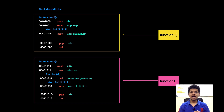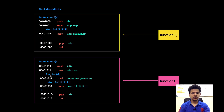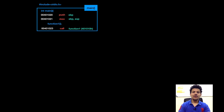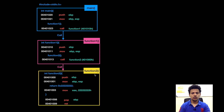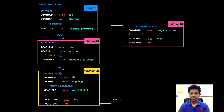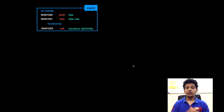For better understanding, I have divided the program into different parts. This is our main, this is our function 1, and this is our function 2. Now we will look at our program's flowchart. Main is calling function 1, function 1 is calling function 2. Then function 2 is returning to function 1, and function 1 is returning to main. In this video, we will only look at the first half of the program, and the other half we will see in the next video.